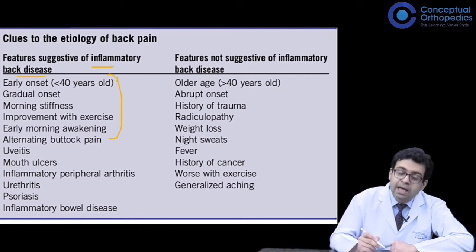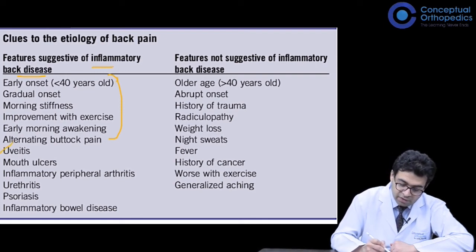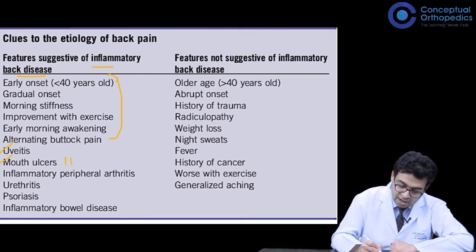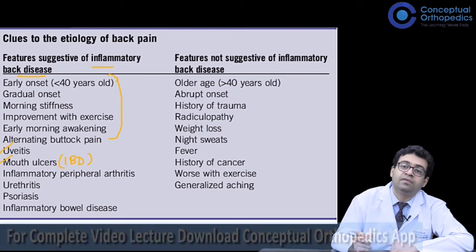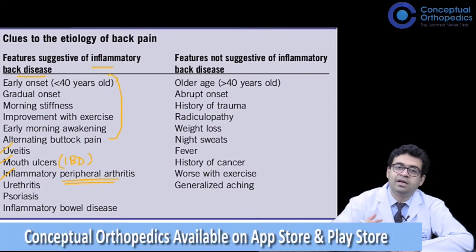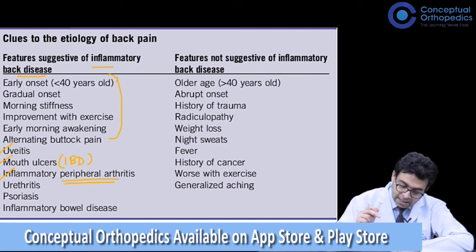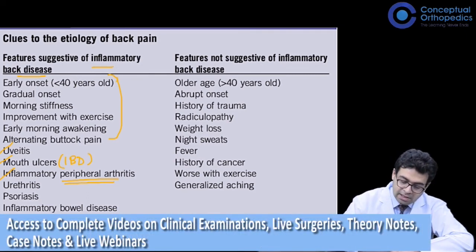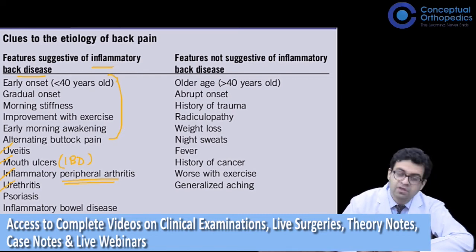A patient with inflammatory back pain or ankylosing spondylitis-related back pain may also give a history of uveitis. They may have oral ulcers, which are more commonly associated if there is concomitant inflammatory bowel disease. They may also have inflammatory peripheral arthritis — knee pain, knee swelling, or ankle pain and swelling alongside the inflammatory back pain — which is a very good clue that we are dealing with ankylosing spondylitis.